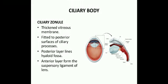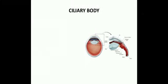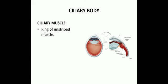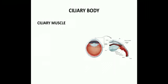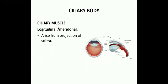The ciliary zonule is a thickened vitreous membrane fitted to the posterior surfaces of the ciliary processes. The posterior layer lines the hyaloid fossa and the anterior layer forms the suspensory ligament of the lens. The ciliary muscle is a ring of unstriated muscle containing longitudinal or meridional fibers, radial fibers, and circular fibers.